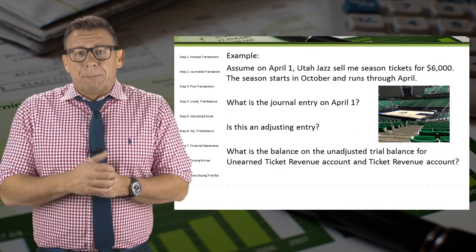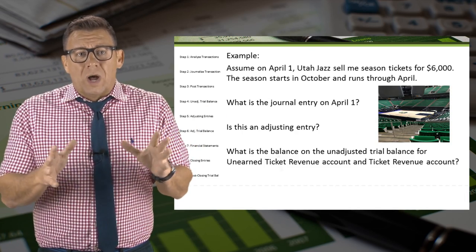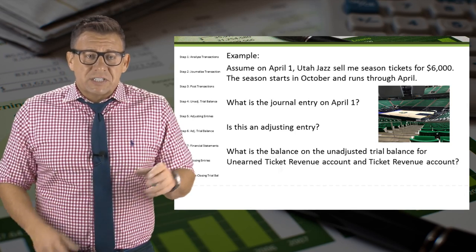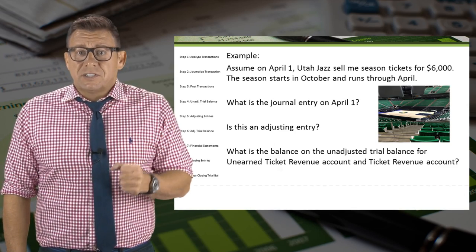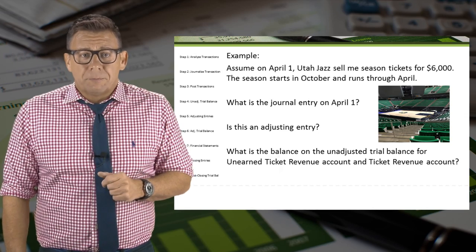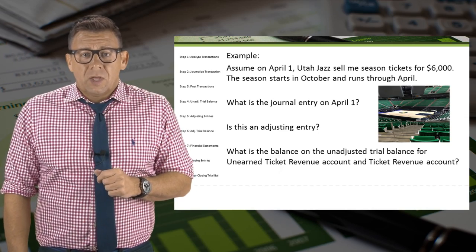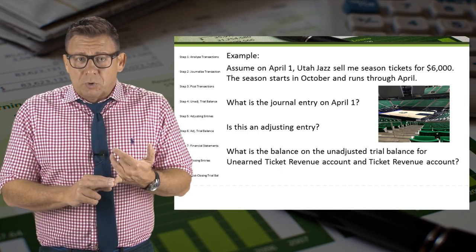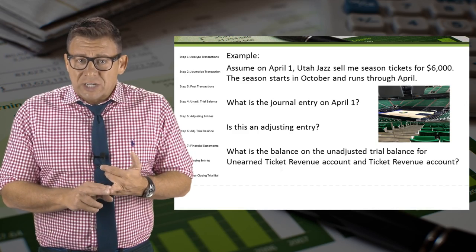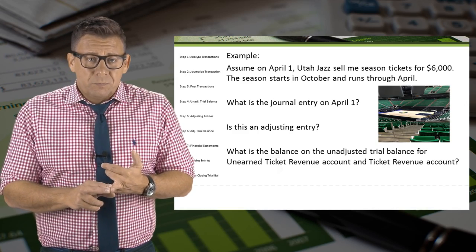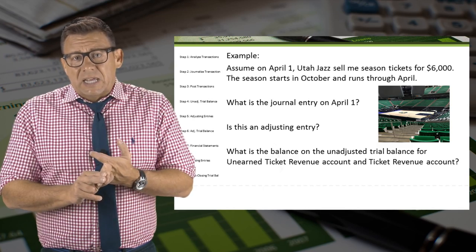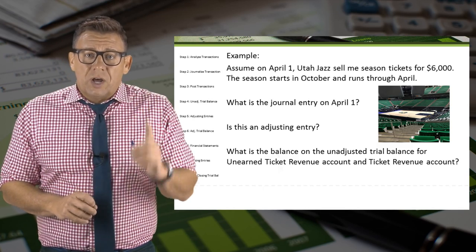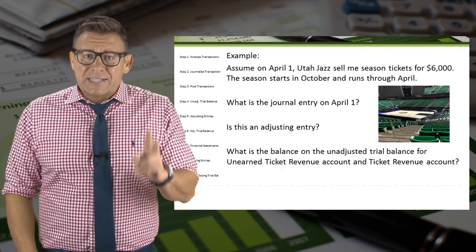Let's look at this example. Assume on April 1, the Utah Jazz sell me season tickets for $6,000. The season starts in October and runs through April. So let's answer the following questions: What is the journal entry on April 1? Is this an adjusting entry? What are the balances on the unadjusted trial balance for unearned ticket revenue and ticket revenue?